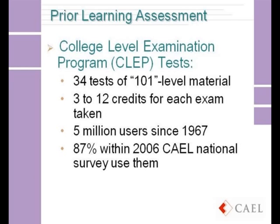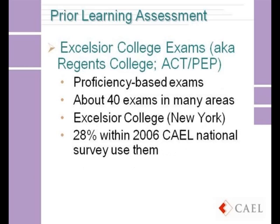The College-Level Examination Program, or CLEP test, offers 34 tests of 101-level material, worth 3 to 12 credits per exam. There have been 5 million users since the program launched in 1967, and in our 2006 survey, 87% of institutions reported using CLEP tests. Excelsior College exams, also known as the Regents College or ACT PEP exams, are proficiency-based exams — there are 40 of them in many different areas, administered by Excelsior College in New York.